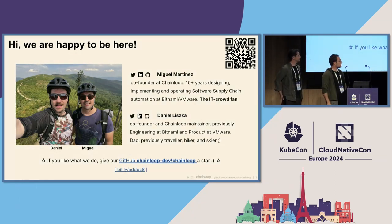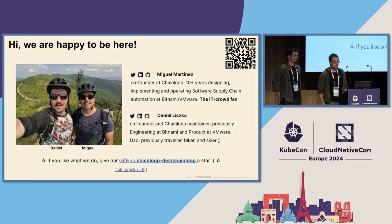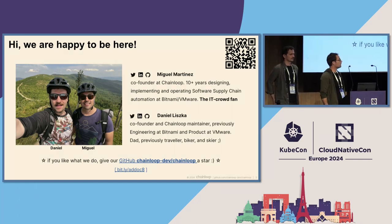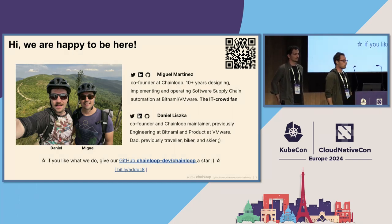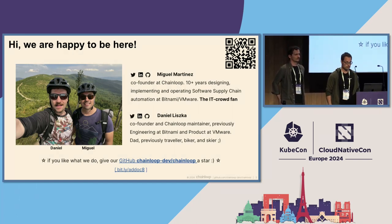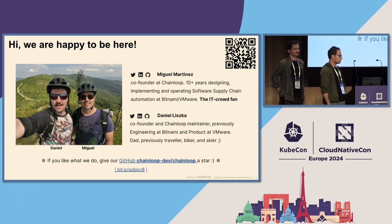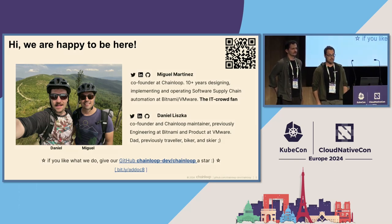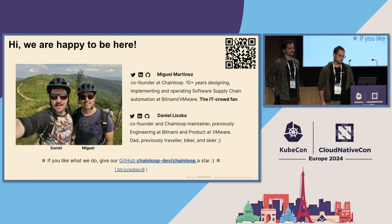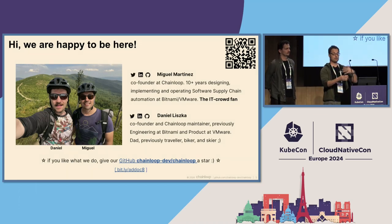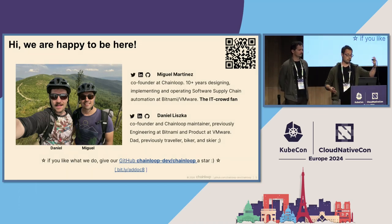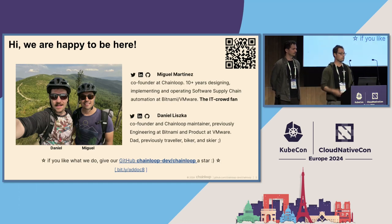Chainloop is an open source project that allows you to collect, secure, and distribute software supply chain metadata. But before that, we used to work at Bitnami and VMware, where we did a lot of CI/CD automation. Some of that automation is what is behind, for example, the Bitnami container images or Helm charts that you might be using today.